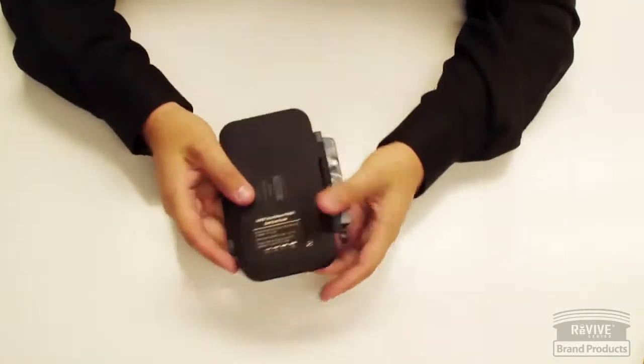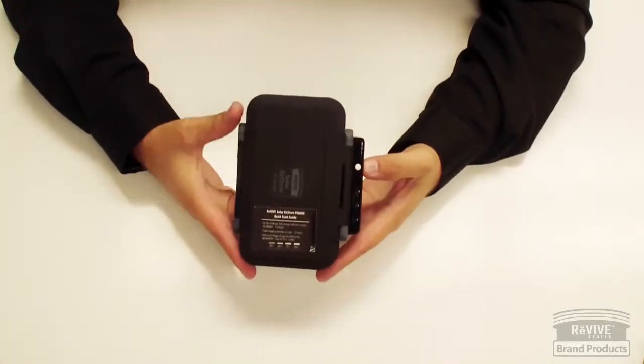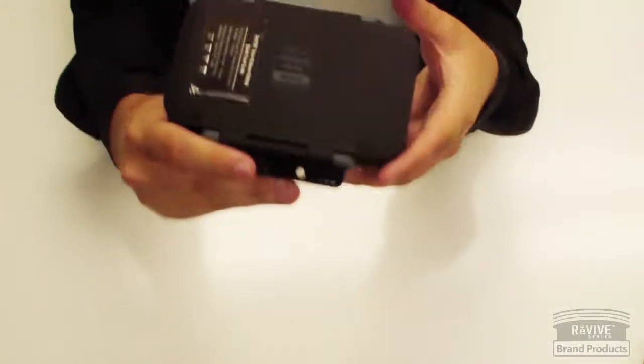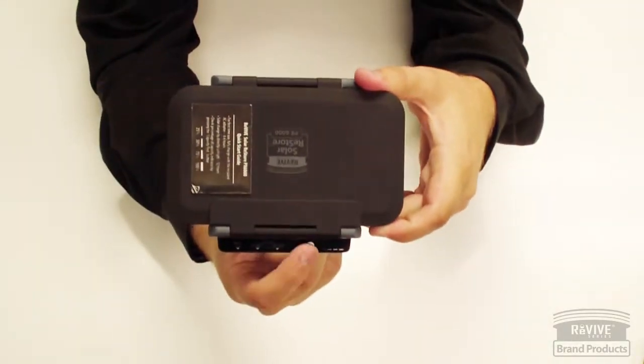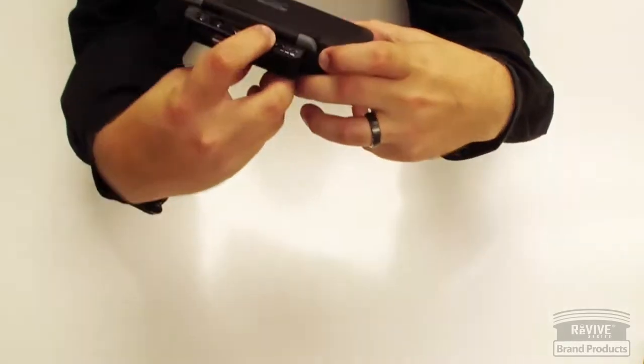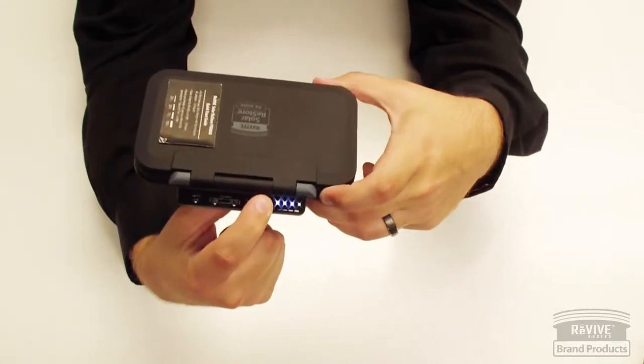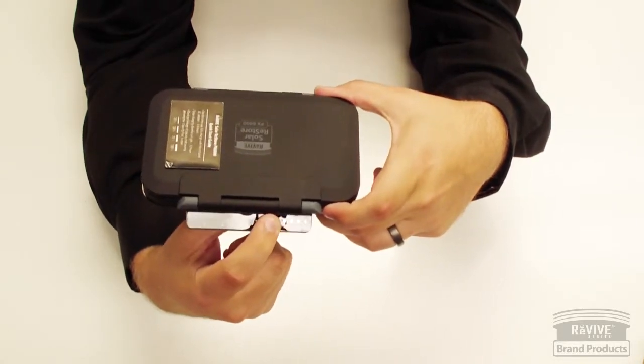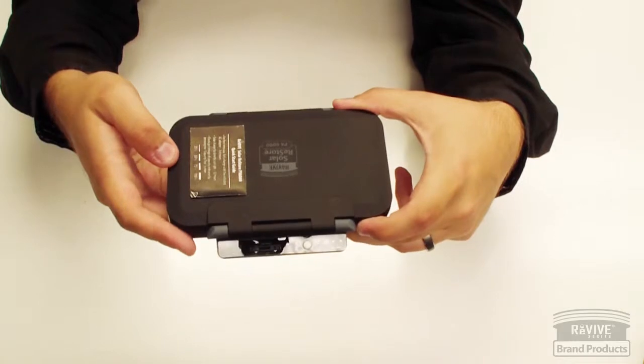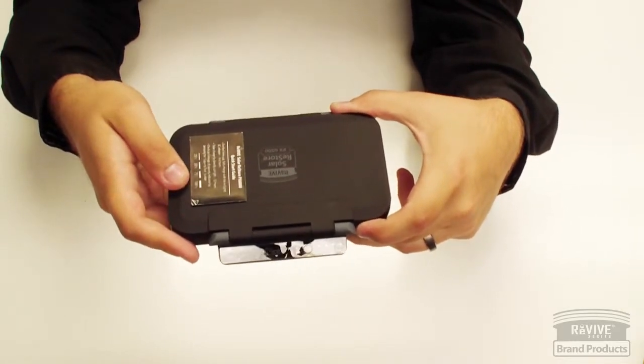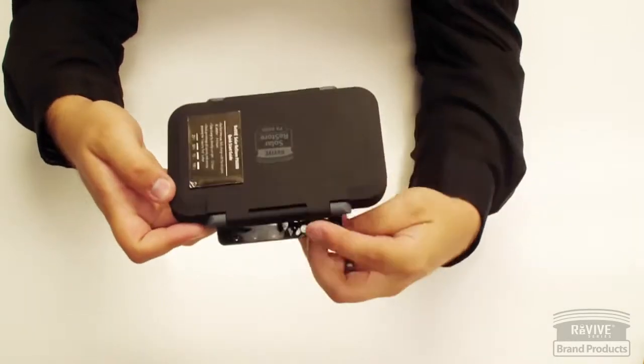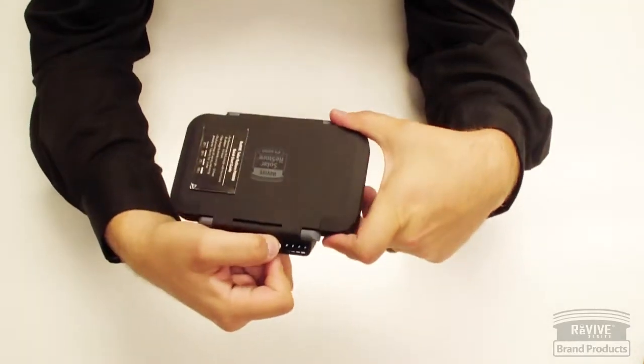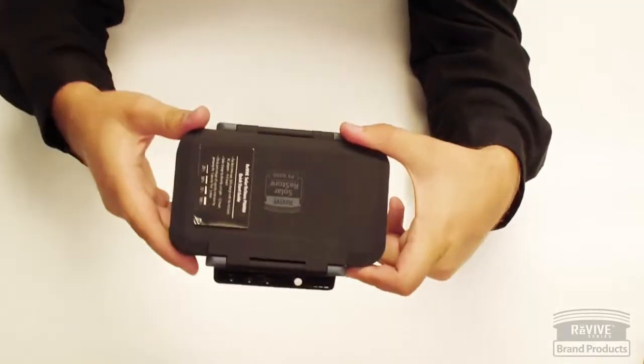When you first get it we recommend that you charge it with AC power first. About four to six hours give it a full charge. There's a test button on the side here. When you press that button you'll get LEDs corresponding with the charge level. There's four different LEDs. One LED for 25%, two for 50%, three for 75%, four for 100%. Right now this particular device is charged up 100%. We got four LEDs lighting up.